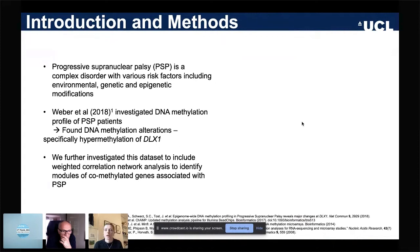In 2018, a group led by Weber investigated aberrant DNA methylation in PSP and they found significant differences in DNA methylation levels between patients and controls. Specifically, the group reported significant hypermethylation of the gene DLX1 across multiple sites.